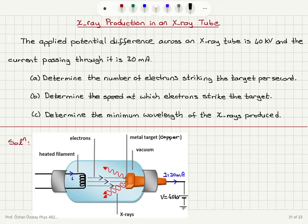X-ray production in an X-ray tube. The applied potential difference across an X-ray tube is 40 kV, and the current passing through it is 30 mA.